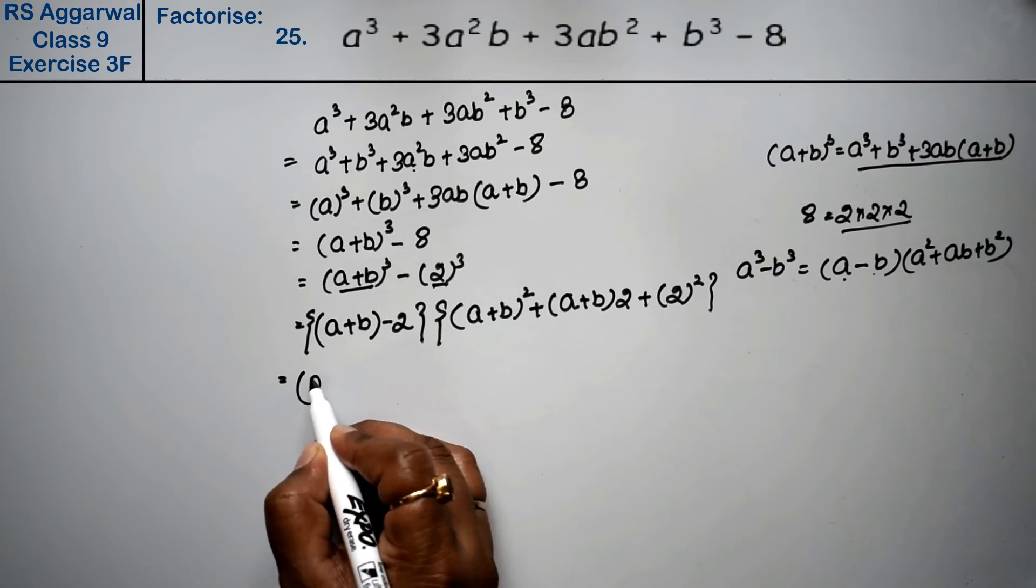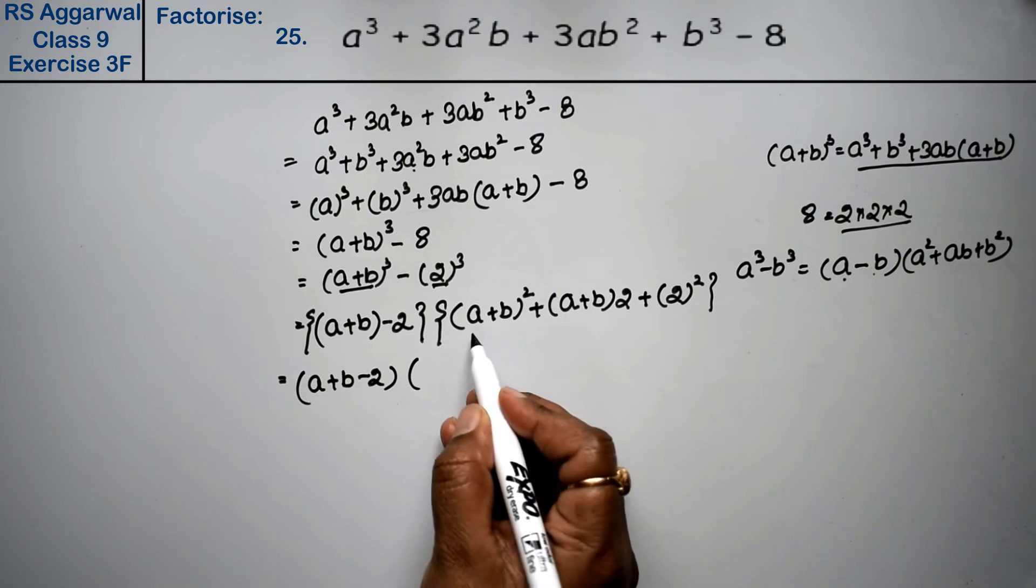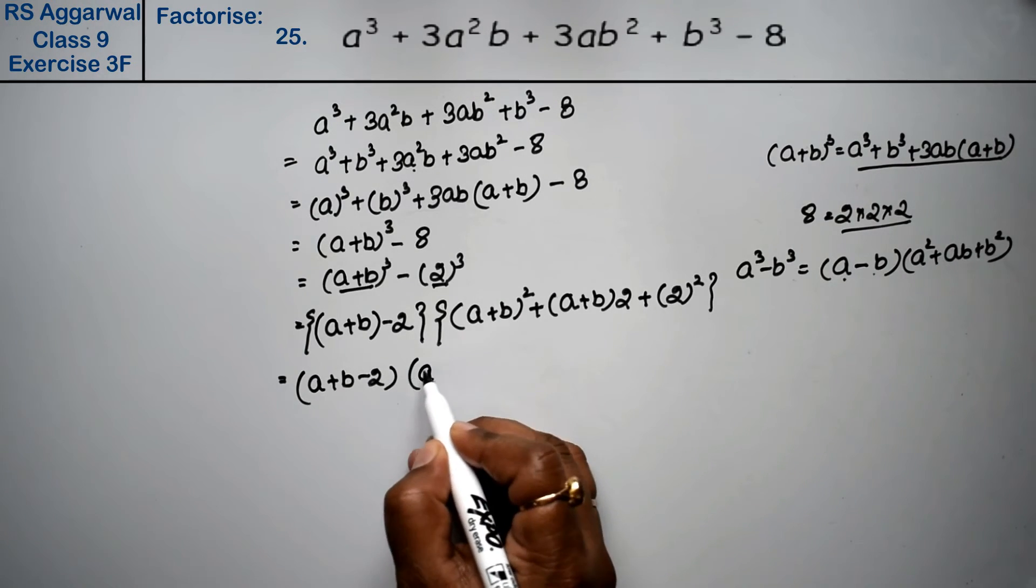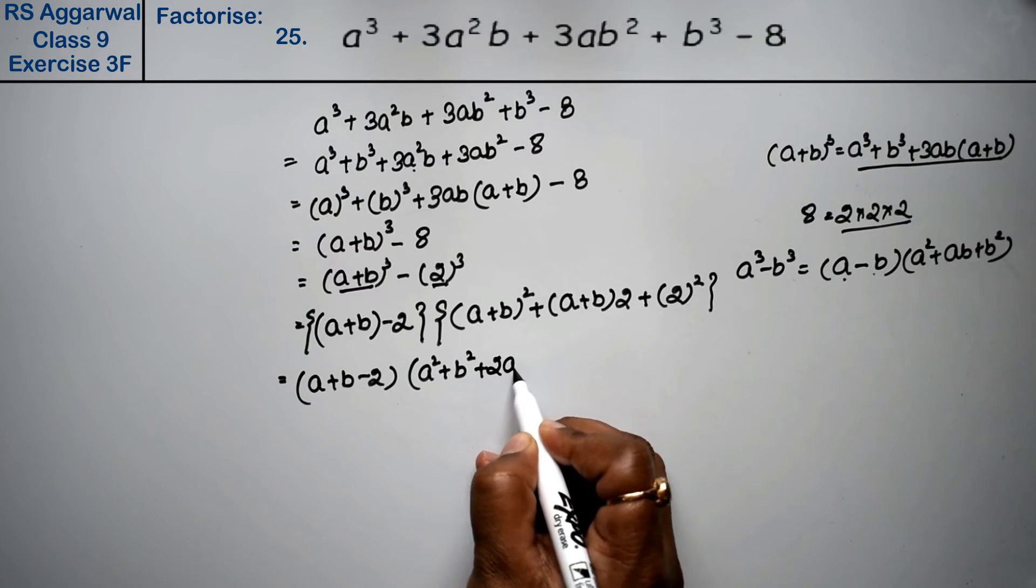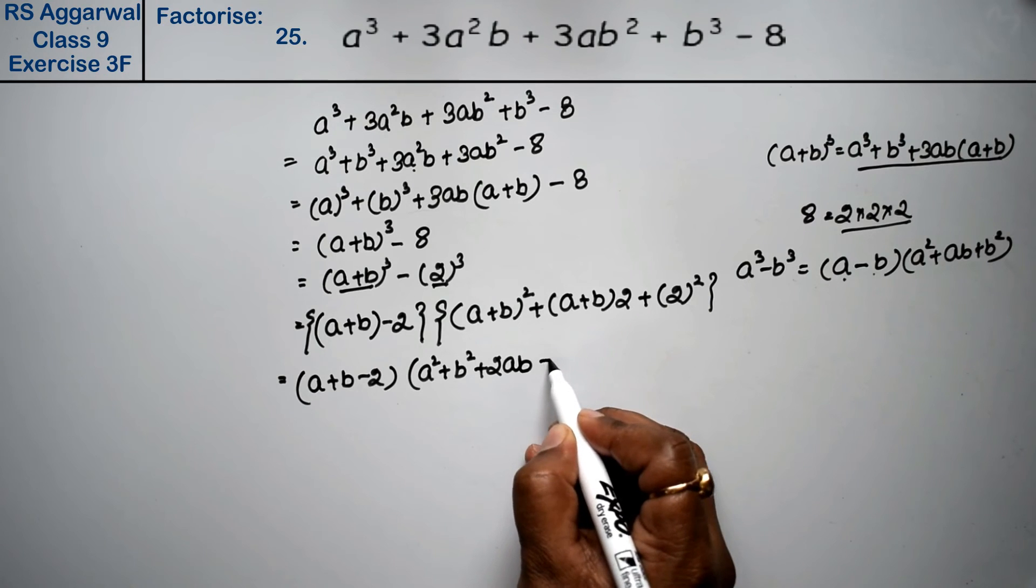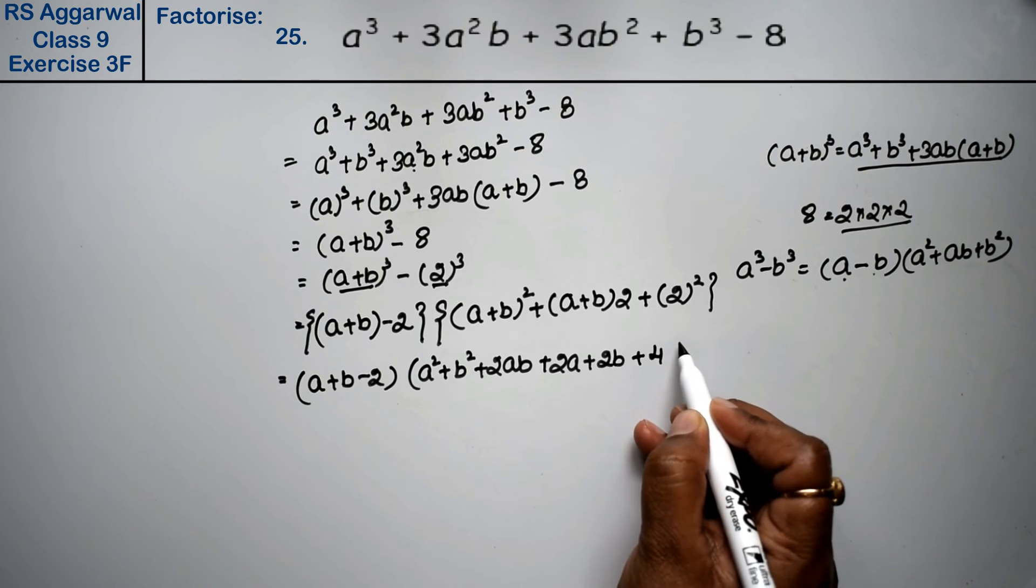Now opening the brackets: a plus b minus 2, and a plus b whole square is a square plus b square plus 2ab, plus 2a plus 2b plus 4 is the answer.